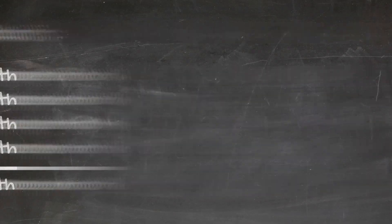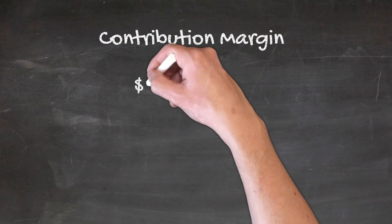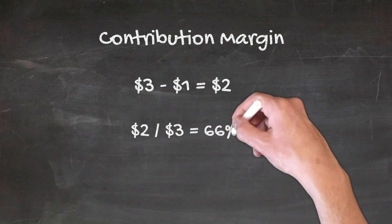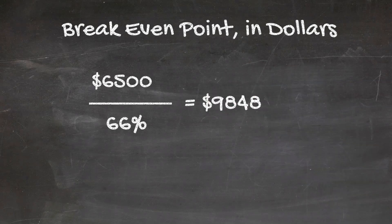That totals $6,500 a month in fixed costs — that is your numerator. In the denominator, let's assume you sell only cards at $3 a piece, and the cost to acquire them from Hallmark or American Card Company is $1. So your contribution margin is $2 divided by $3, or 66%. Your fixed costs of $6,500 divided by 66% means you need to generate $9,848 in sales before you break even with your store every month.